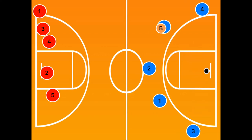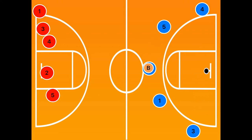So now we know: overplay is immediate backdoor, dribble-at is a backdoor, and other than that it's a pass and cut. Now let's look at the pass and pick away.